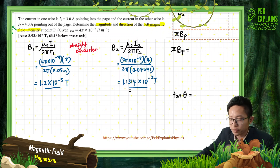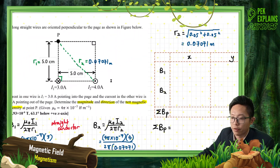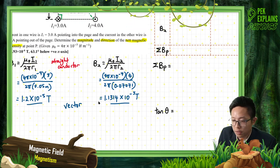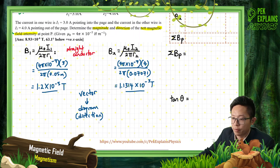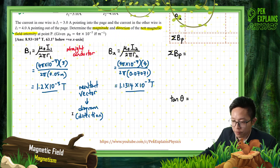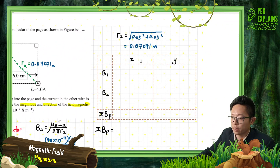Now I need to find the resultant at point P. Remember, this is a vector quantity, so you need to draw a vector diagram. You cannot just add B1 plus B2 directly, because it has direction. To find the resultant vector, you need to resolve it into X and Y components.